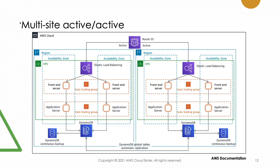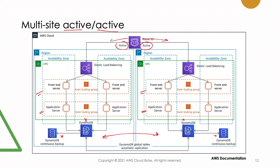The final strategy is multi-site active-active. Both routes are active, and Route 53 supports weighted, latency-based, or geo-based routing. Both regions run at full production scale with similar compute capacity. DynamoDB is used with continuous backup and synchronous replication between regions. Users can be routed to either region. This is the most expensive strategy, as a full replica of each service is running in a separate region.